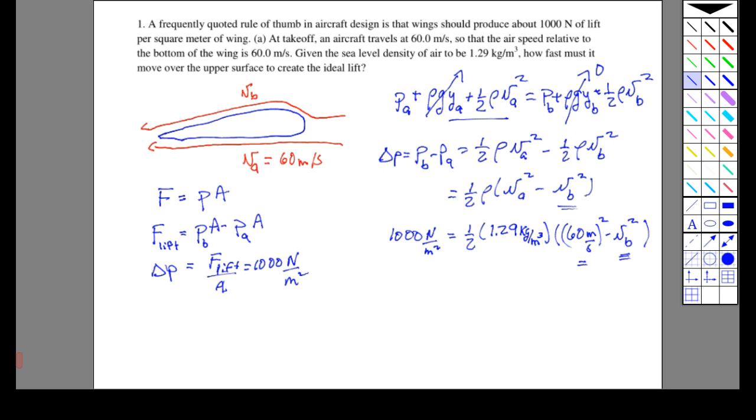I know that the pressure underneath, since the air is moving slower, is higher than the pressure above. So this delta P is actually going to be negative. That should take care of my negative sign issue.